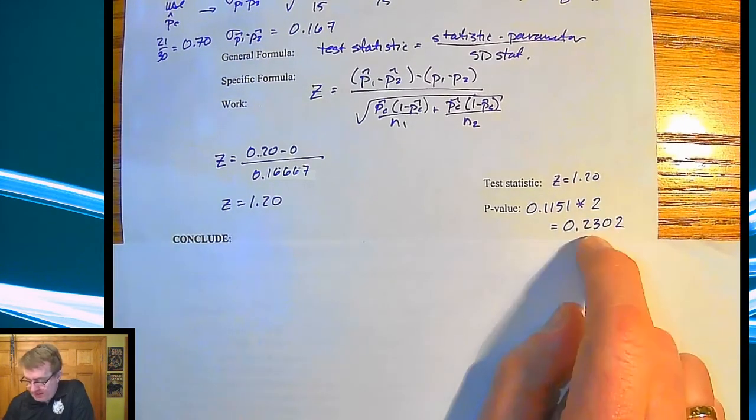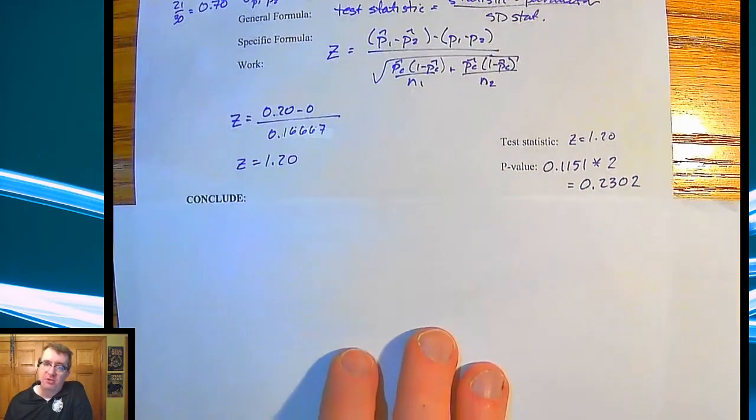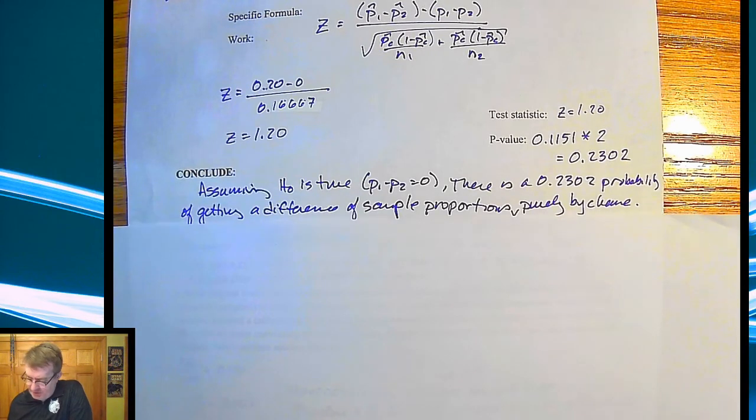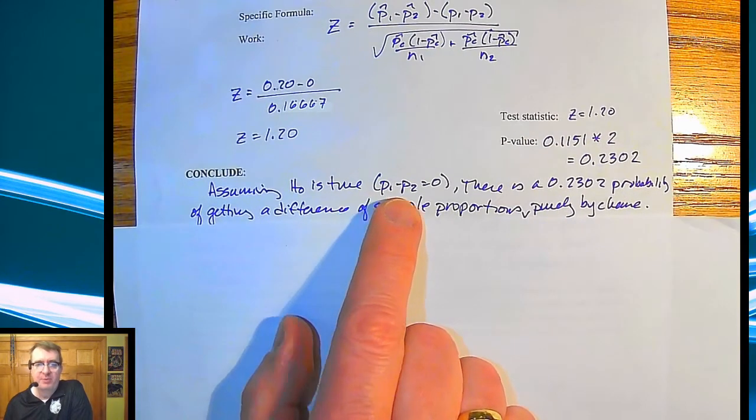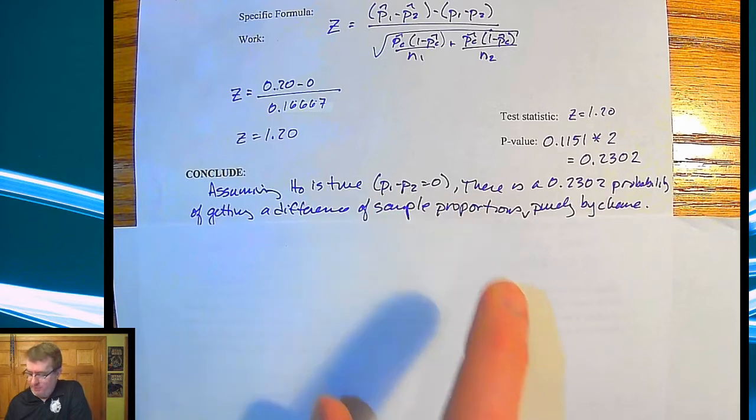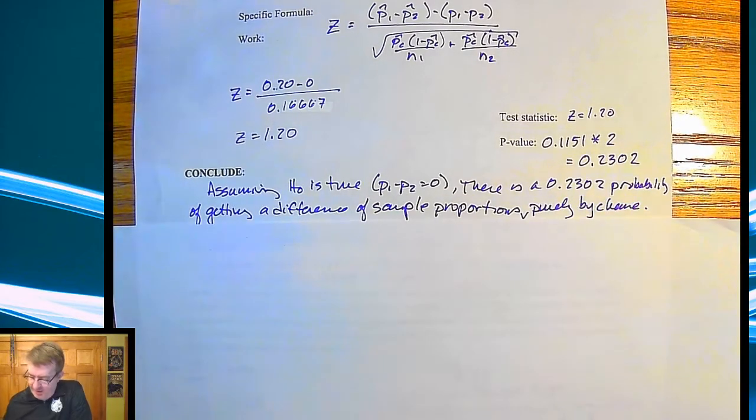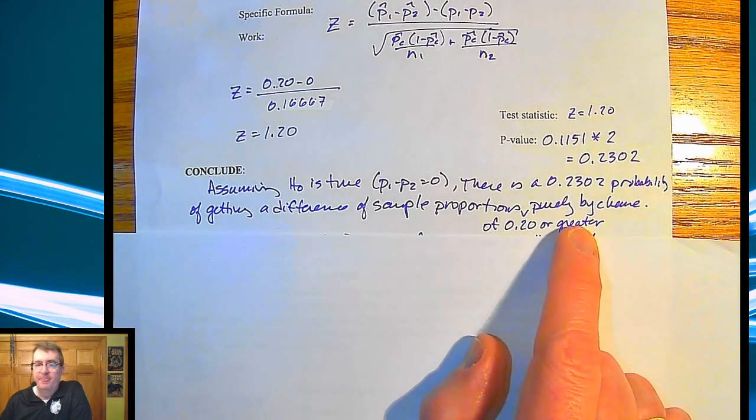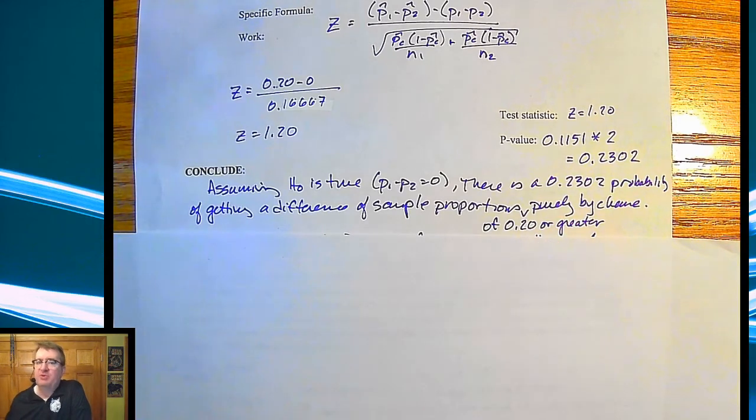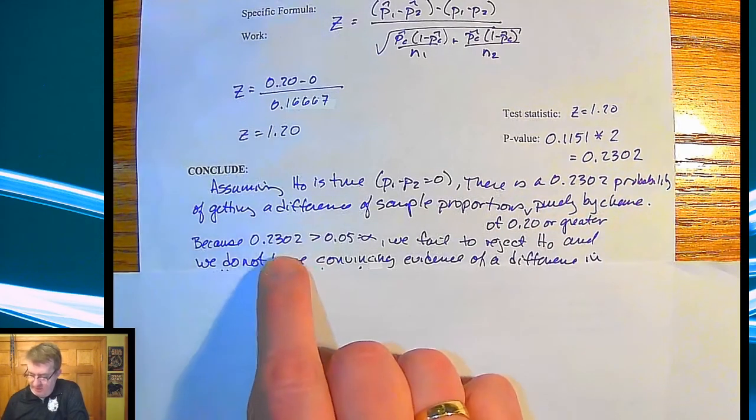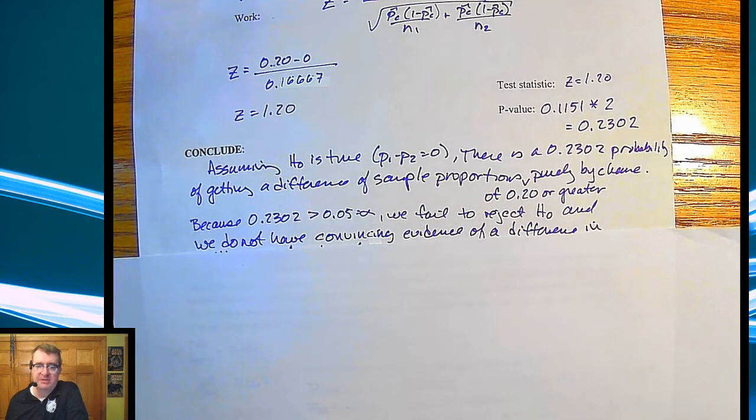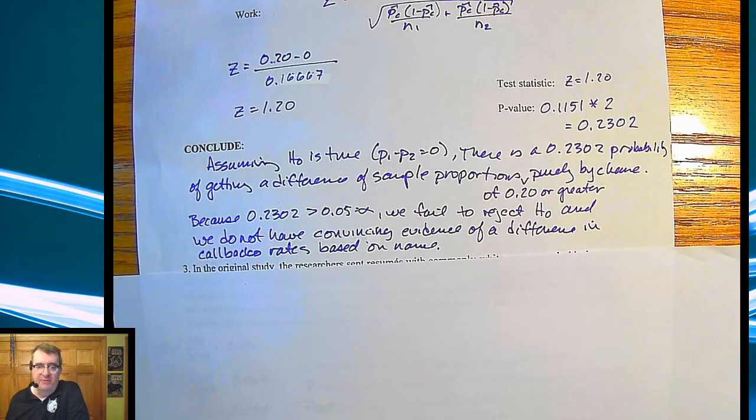So the conclusion, two parts, you have to interpret what this means. And then you have to come up with a conclusion from that and draw. Yeah, talk about what's going on in context. So assuming the null hypothesis is true, that the difference of proportions is equal to 0. There is a 0.2302 probability of getting a difference of sample proportions of 0.20 or greater purely by chance. So what we're seeing happens at almost a quarter of the time. Because of that, because 0.2302 is bigger than 5%, which is our alpha value, we fail to reject the null hypothesis. And we do not have convincing evidence of a difference in callback rates based on name.